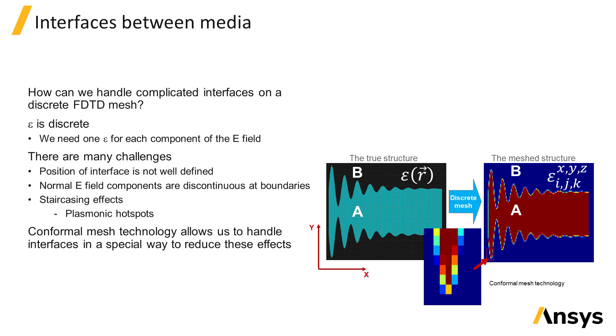The conformal mesh technology is a method to deal with these issues by modifying the standard FDTD update near interfaces to use an integral solution to Maxwell's equations. This is equivalent to introducing an effective permittivity that is anisotropic and can provide a much more accurate solution. We will discuss the conformal mesh technology in more detail later.